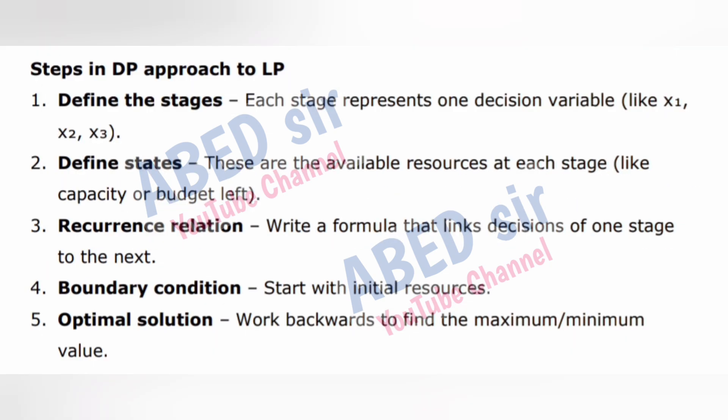Steps in DP approach to LP: 1. Define the stages — each stage represents one decision variable like x₁, x₂. 2. Define states — the available resources at each stage like capacity or budget left. 3. Recurrence relation — write a formula that links decisions of one stage to the next. 4. Boundary condition — start with initial resources. 5. Optimal solution — work backwards to find the maximum or minimum value.